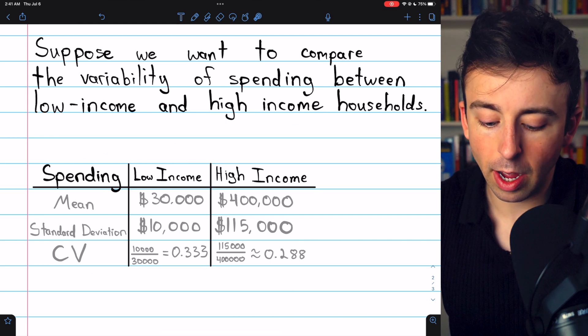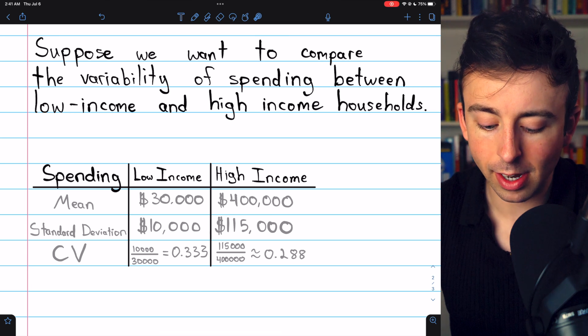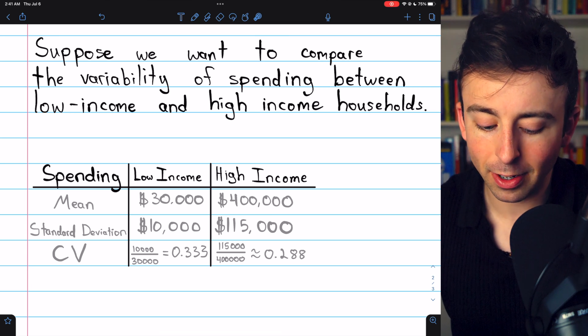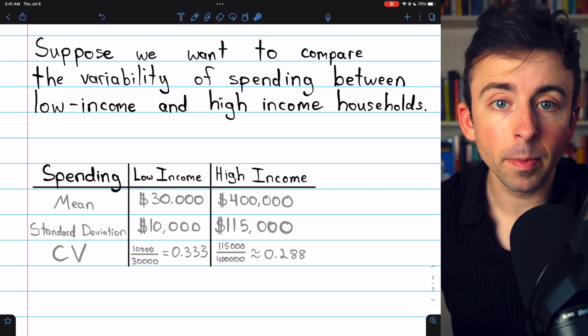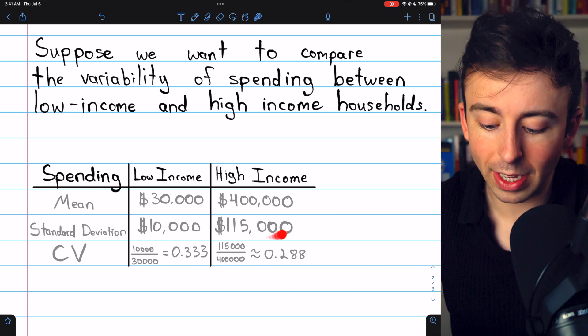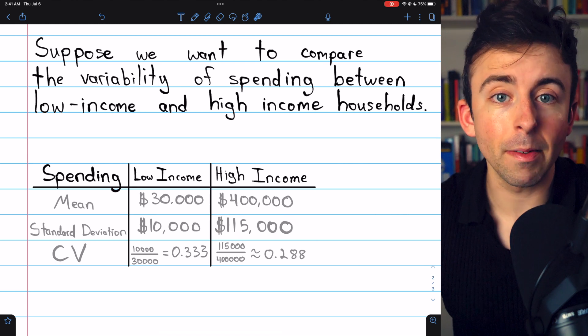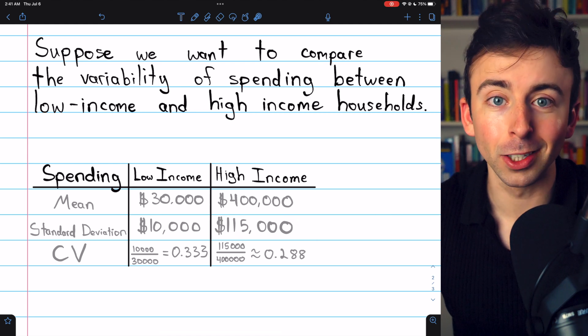Say the mean of low-income household spending is $30,000, and the standard deviation is $10,000. The mean and standard deviation of the high-income households is a lot bigger. As you would expect, the standard deviation is a lot bigger, because the amounts of money here are just a lot bigger.